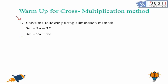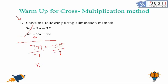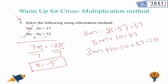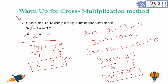To solve it, we put minus here, plus here, and minus here, which will cancel off 3m with 3m and we are left with 7n equals minus 35. Now we divide both sides by 7, which gives us n equals minus 5. Now we substitute the value of n: 3m minus 2 times minus 5 equals 37, giving us 3m plus 10 equals 37, so 3m equals 27, and dividing both sides by 3 gives m equals 9. So n is minus 5 and m is 9 — this is the solution.